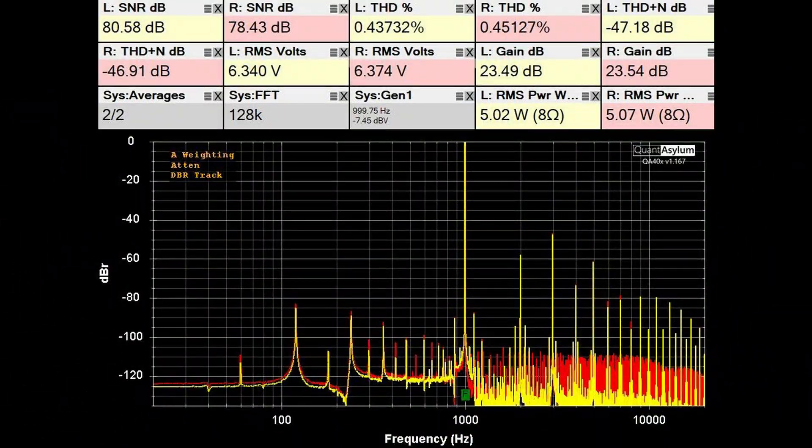Here we have the THD SNR at 1 kHz with the SE401 putting out 5 watts into 8 ohms. And there really isn't much change from the 1 watt status other than the SNR has improved 2 to 3 dB. The THD is still less than 0.5%, and the THD plus noise has stayed about the same at 47 dB.